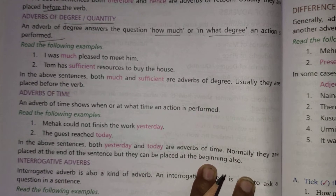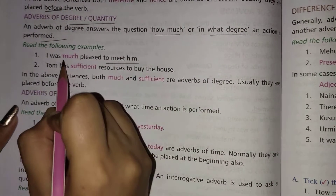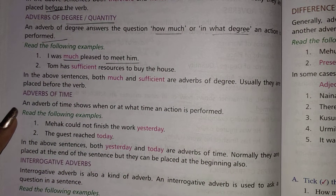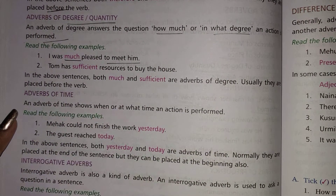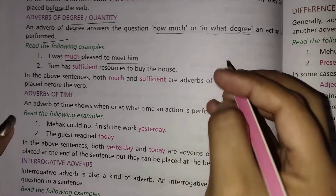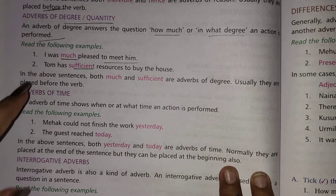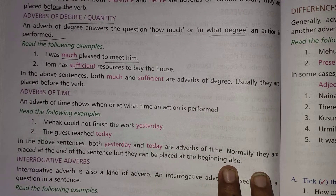For example: 'I was much pleased to meet him.' How much? Much pleased. Another example: 'Tom has sufficient resources to buy the house.' In the above sentences, both 'much' and 'sufficient' are adverbs of degree.